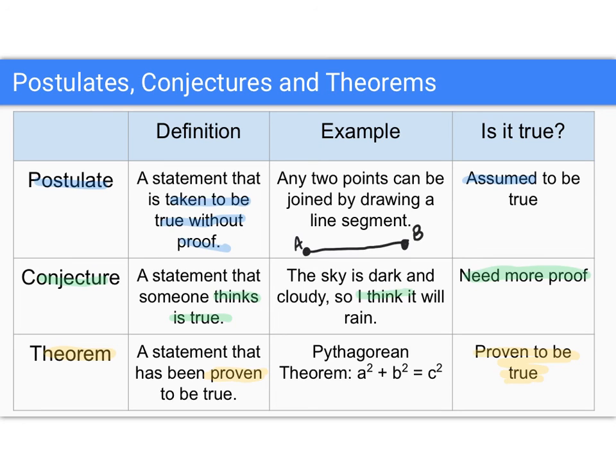So remember, a postulate, a key word here is assume. We assume that that's true. You don't have to prove it. A conjecture, need more. We need more proof. We have not yet proven that. We just think it might be true. And a theorem is proven to be true. We know it's true because it's been proven. So those are three types of statements that you're likely to see in geometry.